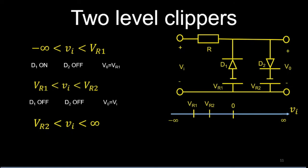In the last interval (vi > vr2): D1 is off because vi > vr1 (n-side of D1 exceeds p-side), and D2 is on because vi > vr2 (p-side of D2 exceeds n-side, since vi is connected to p-side and vr2 to n-side of D2). With D1 off and D2 on, output equals vr2.